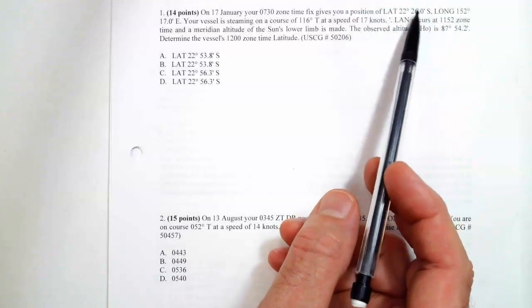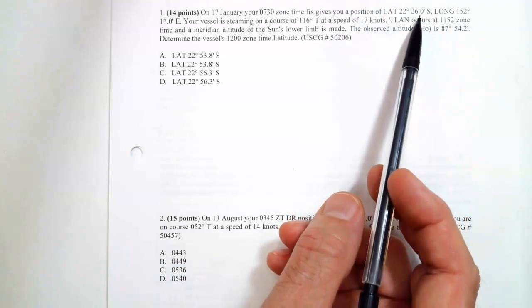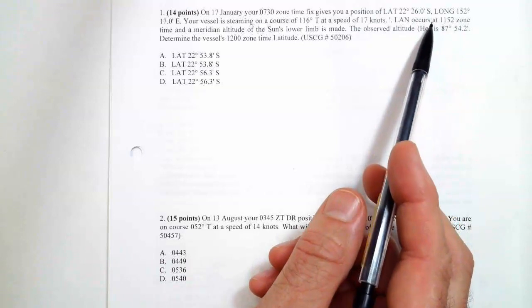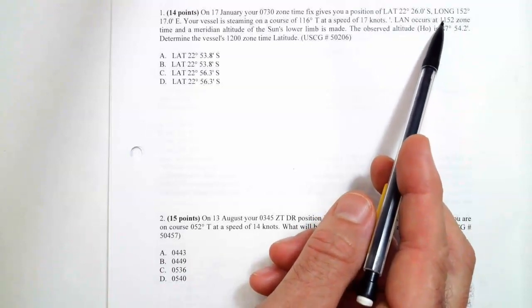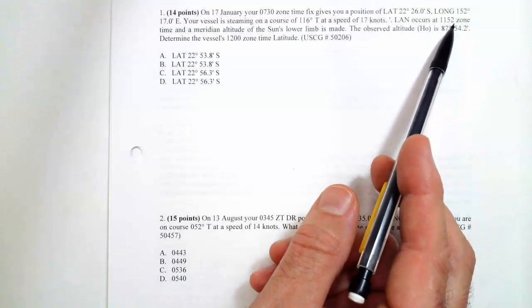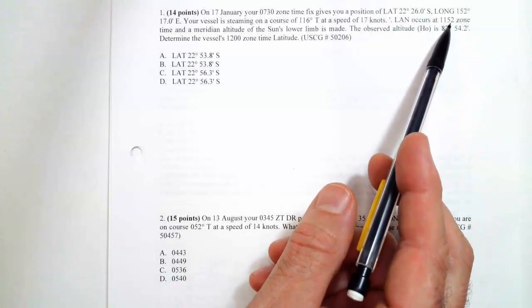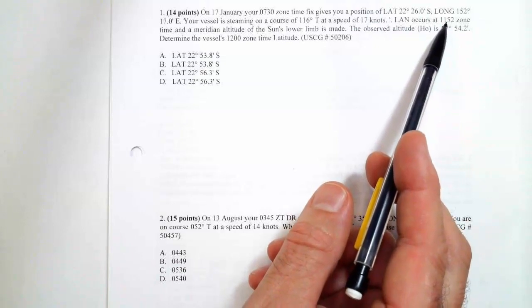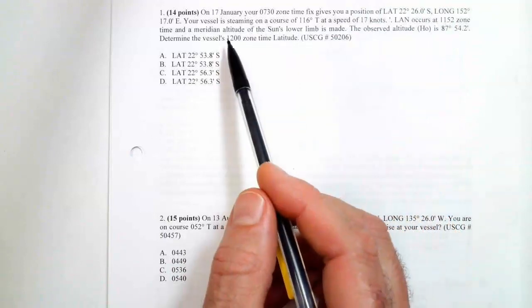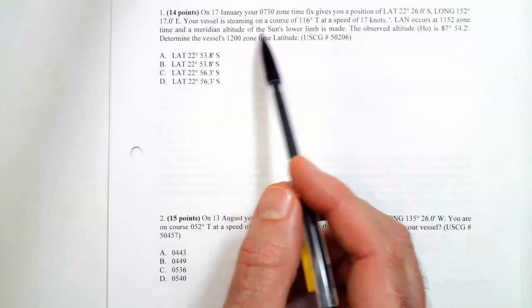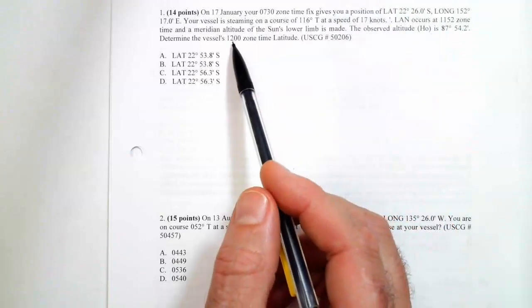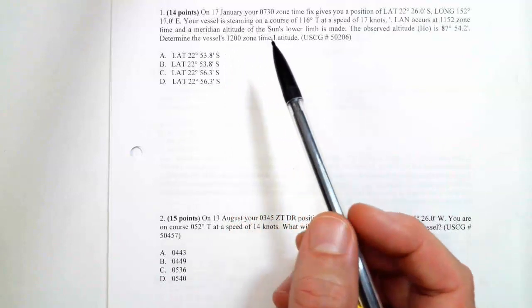So we'll be in this general vicinity. This is several hours later, but because they give us time of LAN, they're asking us what is our latitude. Here's a tricky thing - they're not asking us for a latitude at 1152. They're asking us for our latitude at noon, which is eight minutes later. So there's going to be a little advance at the end.